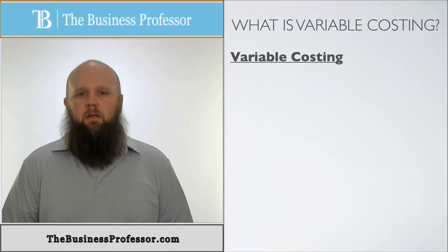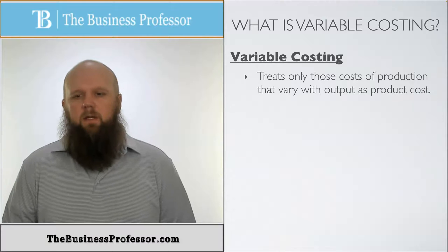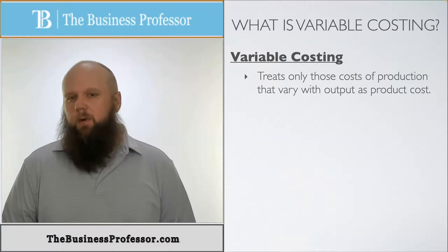Now what is variable costing? Variable costing is a method in which we treat only the cost of production that vary with output as a product cost.